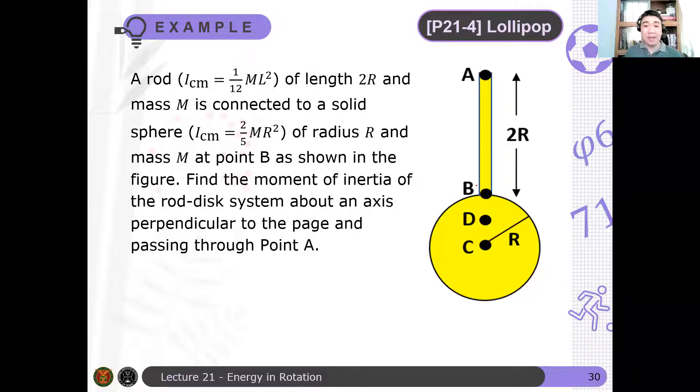So point B is the connection point. What we want is to determine the moment of inertia of the rod-sphere system about an axis perpendicular to the page and passing through point A. So we need to find the moment of inertia about this point here.